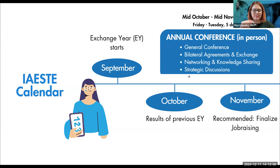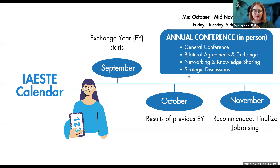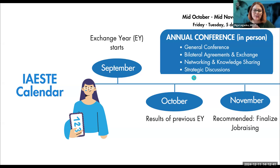The IASTE calendar starts in September — that's when we start our exchange year, and we finish in August. In October, the results of the previous exchange year become available. We believe in data-driven decisions, so it's important to have this data as a summary to inform your exchange strategy for the next exchange year. Results of the previous data are published in October.